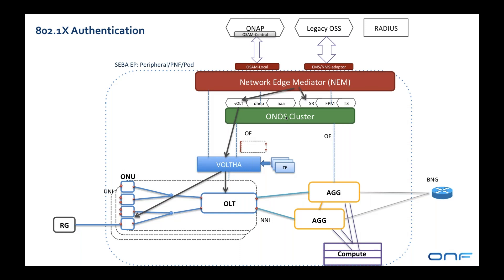At the same time, NEM also calls the segment routing application in ONOS to program the same thing in the aggregation switching, because the VLAN cross-connect needs to be programmed between the OLT and the upstream BNG, so that the data traffic flows through to the BNG.